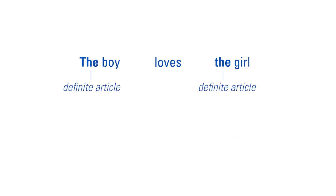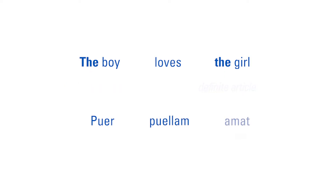In contrast, a feature that changes more often is whether the language has words or suffixes like the definite article — present-day English 'the,' as in 'the boy.' In the Latin translation 'puer puellam amat,' there is nothing corresponding to the definite article. Languages can acquire definite articles like 'the' and lose them, and that seems to happen much more rapidly than changes in verb-object order.